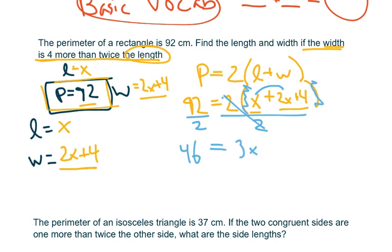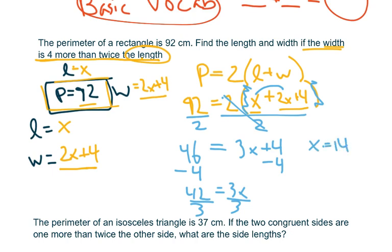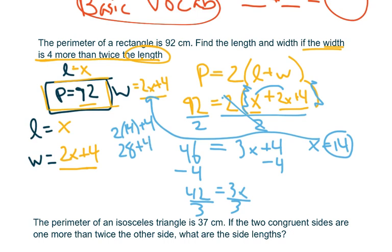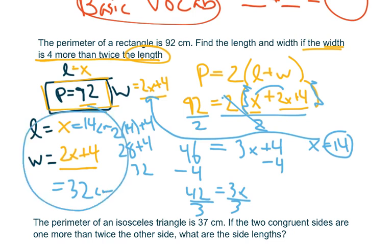After dividing by 2 and removing parentheses, I have 3X plus 4 equals 46. Subtract 4 from both sides: 42 equals 3X. Divide by 3: X equals 14. I plug this into the width expression: 2 times 14 plus 4 equals 28 plus 4, which is 32. So the length is 14 centimeters and the width is 32 centimeters. That's how we do a rectangular perimeter problem.